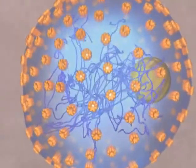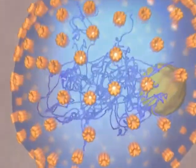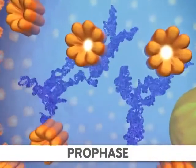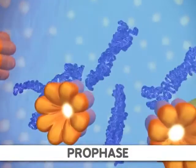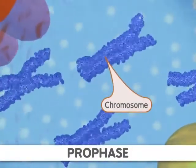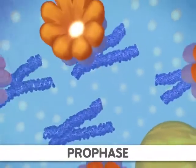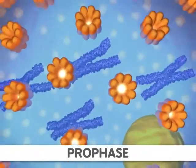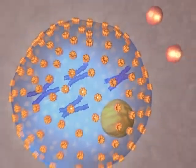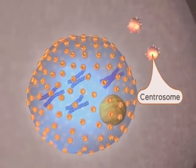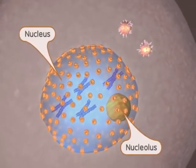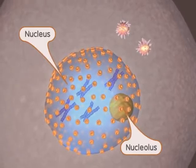During the first stage of mitosis, called prophase, we first see the classic chromosome structure. This occurs through a condensation process. At the same time, protein strands called microtubules appear from the centrosomes in animals. Finally, a structure found within the nucleus, the nucleolus, disappears.